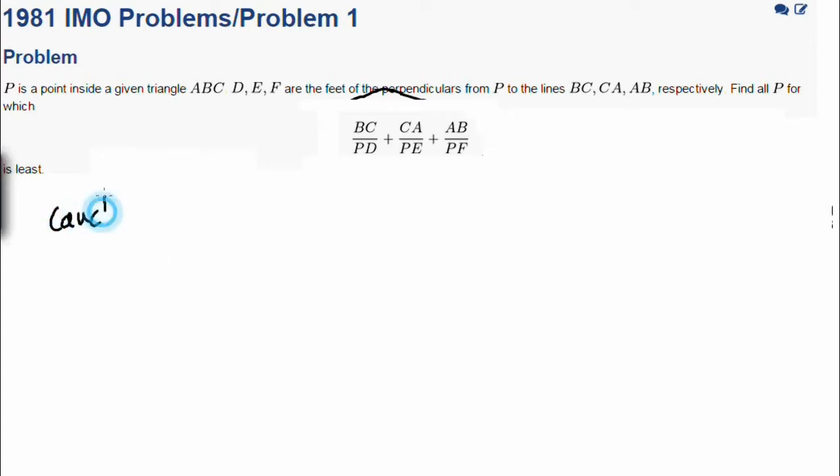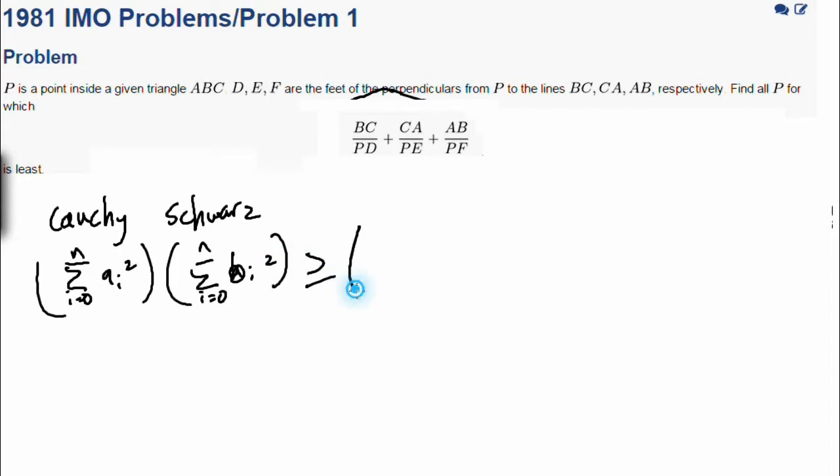So the Cauchy-Schwarz Inequality - this is how you spell Cauchy-Schwarz - basically says the sum of i equals 0 to n times bi squared is greater than or equal to the sum of ai bi equals 0 squared.